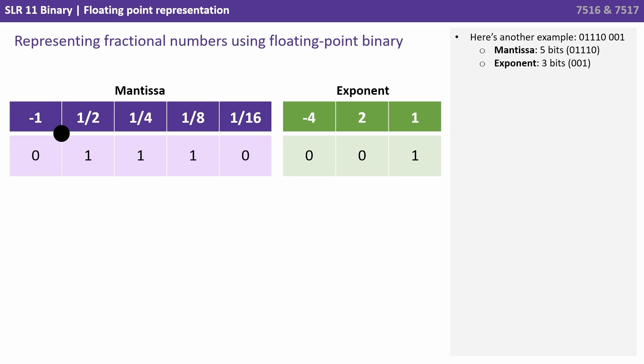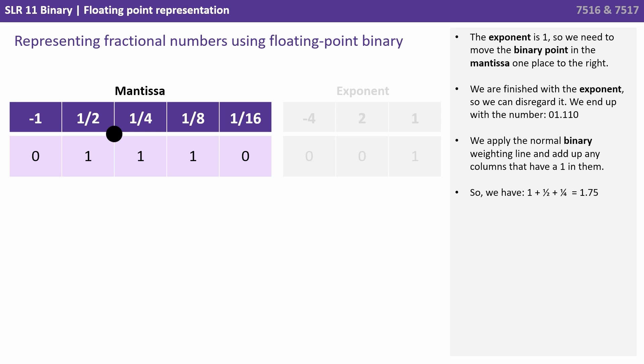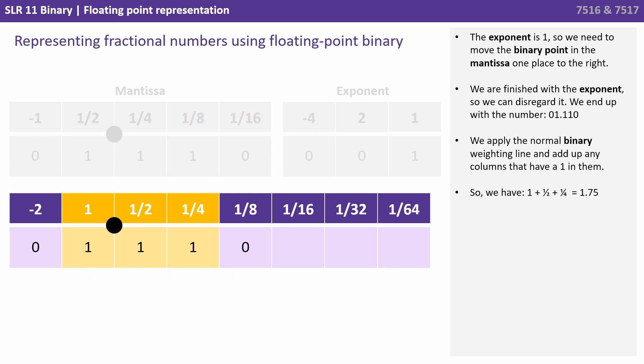Here's another example. 0, 1, 1, 1, 0, 0, 0, 1. And again the first 5 bits are the mantissa and the final 3 bits are our exponent. The exponent is 1, so we need to move the binary point in the mantissa one place to the right. We're finished with the exponent so we can disregard it and we end up with the number 0, 1, 1, 1, 0. We apply the normal binary weighting line and add up any columns that have a 1 in them. So we've got a 1 plus a half plus a quarter or 1.75.